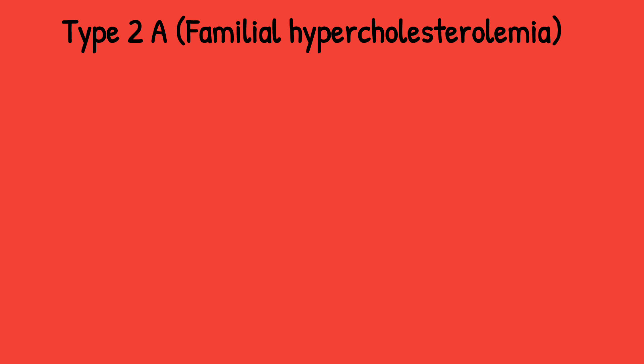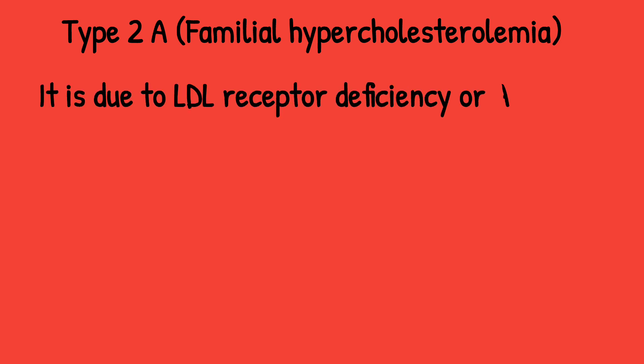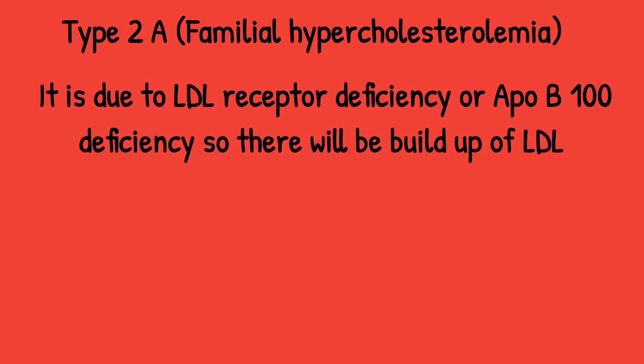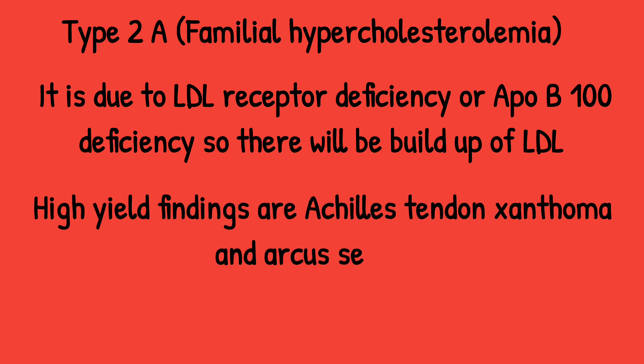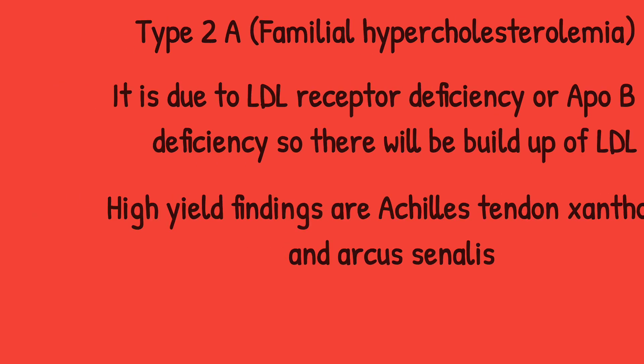Type 2a is familial hypercholesterolemia. It is due to LDL receptor deficiency or apoB100 deficiency, so there will be a buildup of LDL. High-yield findings are Achilles tendon xanthomata and arcus senilis. Remember these high-yield findings for Type 2a.